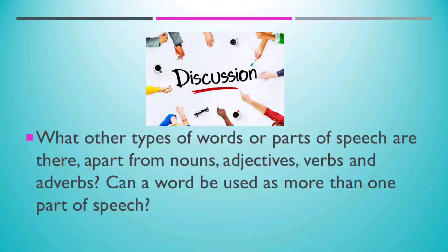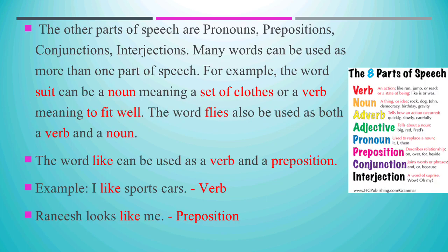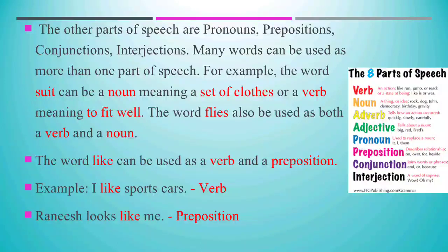Apart from nouns, adjectives, verbs, and adverbs, what other types of words or parts of speech are there? Can a word be used as more than one part of speech? The other parts of speech are pronouns, prepositions, conjunctions, and interjections. Many words can be used as more than one part of speech. For example, the word 'suit' can be a noun meaning a set of clothes, or a verb meaning to fit well. The word 'flies' can also be used as both a verb and a noun.